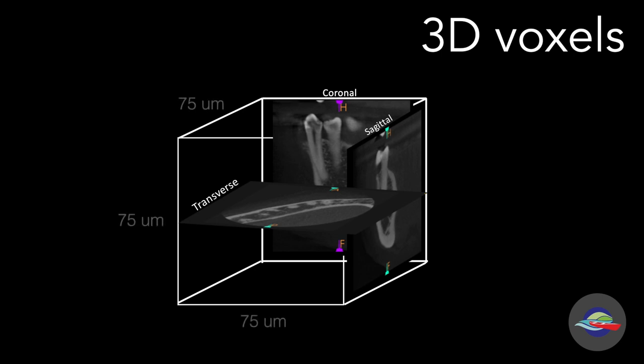So 75 microns is equal to 0.075 millimeters. Just take a second to wrap your head around that level of resolution — a new image is acquired every 0.075 millimeters. Another way to think of it: for every millimeter that the x-ray source rotates around the object, around a person's head, it takes 13 single images.